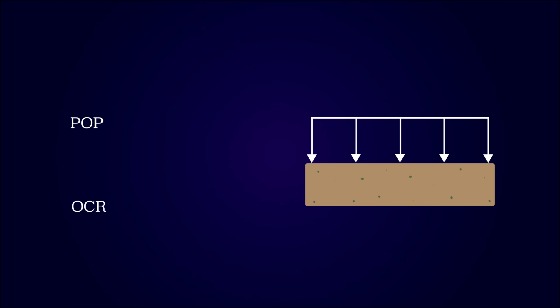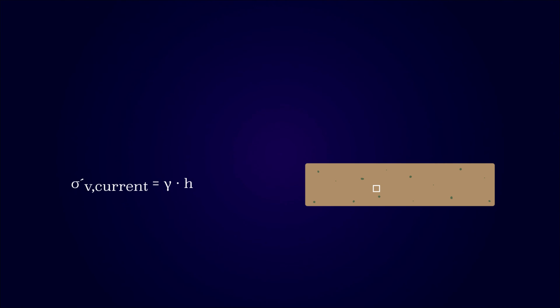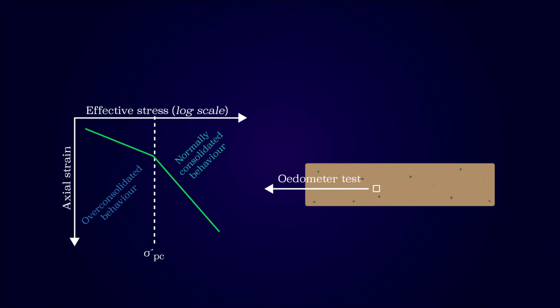They are also both based on the pre-consolidation stress and the current vertical effective stress. The current vertical effective stress at a given depth is determined according to the geostatic stress formulas. If the water table is neglected, this only requires the soil's unit weight. The pre-consolidation stress is determined from odometer tests as the breakpoint between normally consolidated and overconsolidated behavior. Nearly all soils will show some kind of pre-consolidation stress, since the overburden pressure is included.